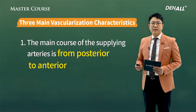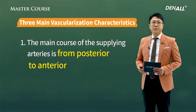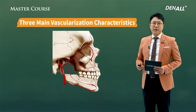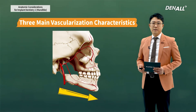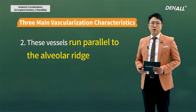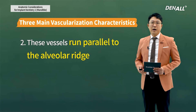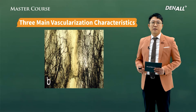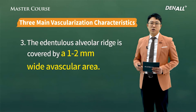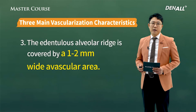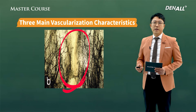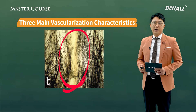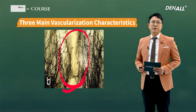Three main vascularization characteristics: First, blood is supplied from posterior to anterior - the blood comes from the heart and runs from the posterior region to the anterior region. Second, the vessels run parallel to the alveolar ridge. Third, therefore the edentulous alveolar ridge is covered by a 1-2 mm wide vascular area. These three main vascularization characteristics are very important in designing the incision for implant placement. The details will be covered in the flap design lecture.